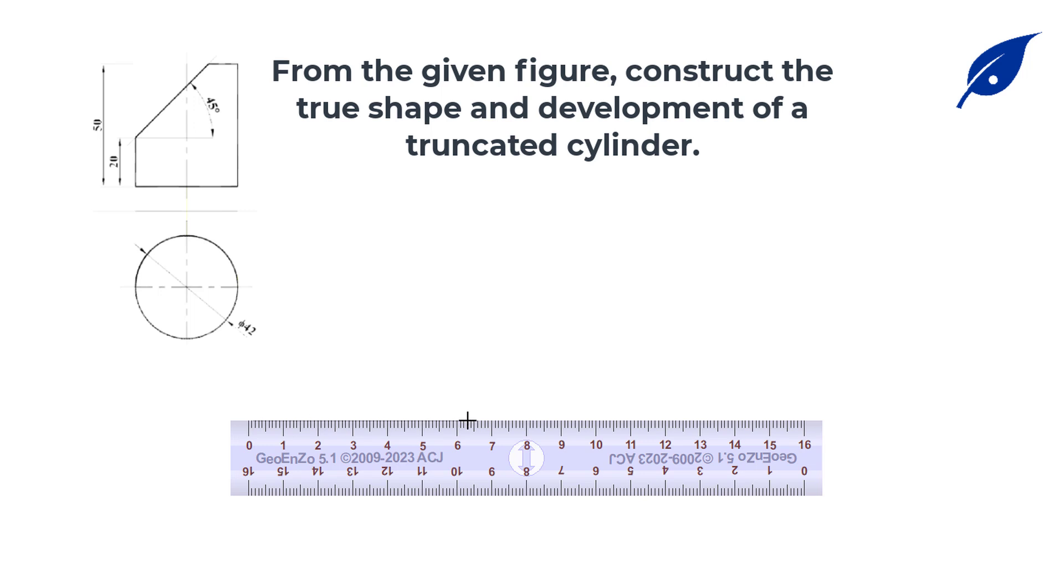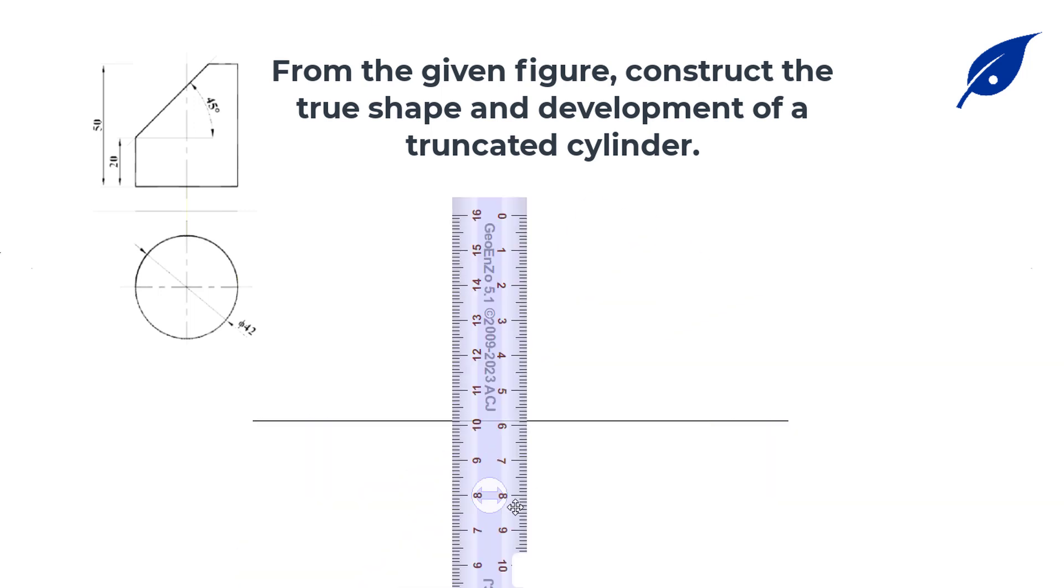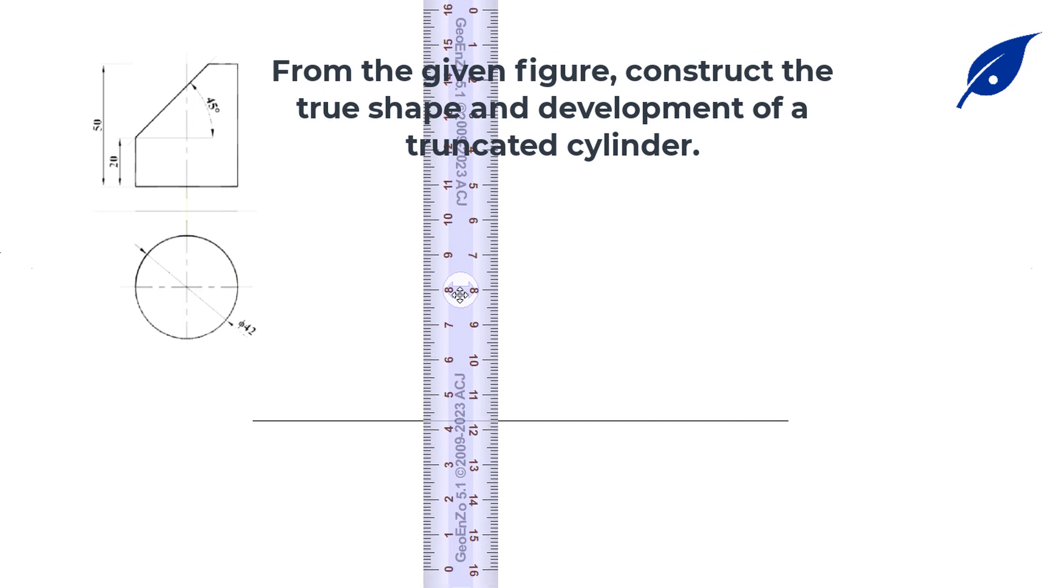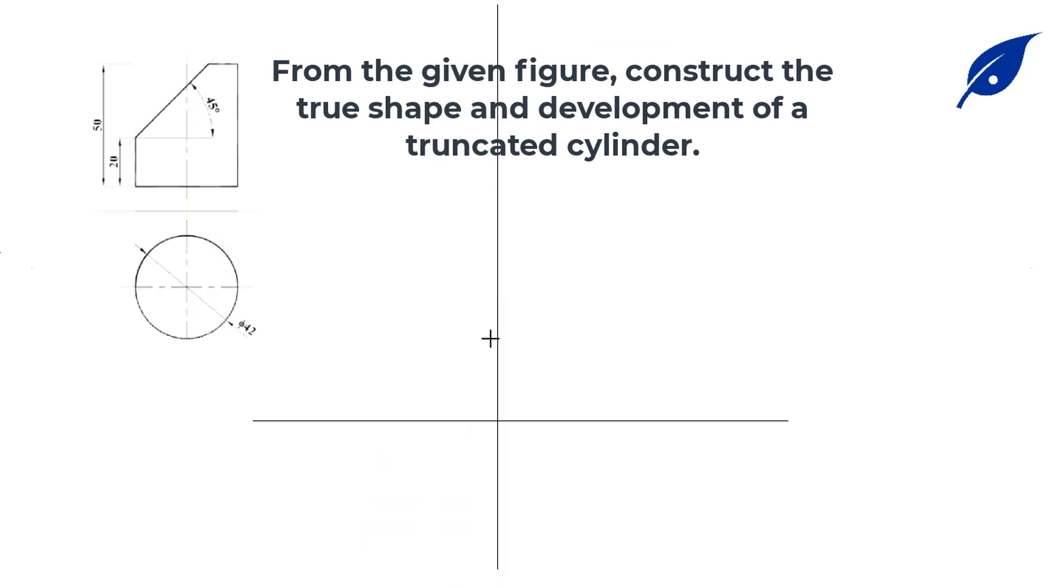Welcome to this lesson. In today's lesson we shall consider the construction of a true shape and development of a truncated cylinder from the given figure. In this given figure the plan is given and the radius of this cylinder is 21 millimeters, the diameter is 42 millimeters.